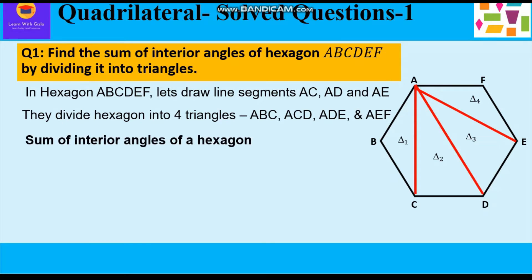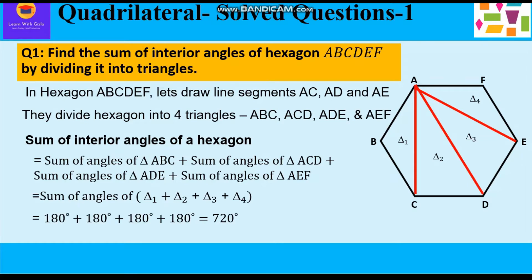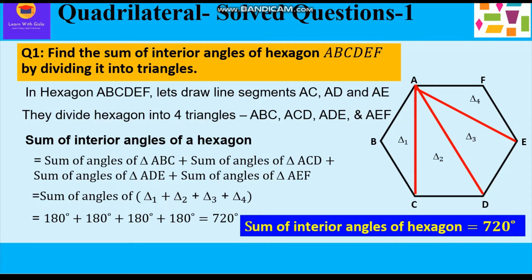The sum of interior angles of the hexagon can be calculated by adding the sum of angles of all these triangles. So: sum of angles of triangle ABC + triangle ACD + triangle ADE + triangle AEF equals 180° + 180° + 180° + 180° = 720°. Therefore, the sum of interior angles of a hexagon is 720°.